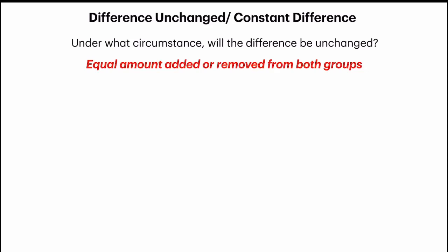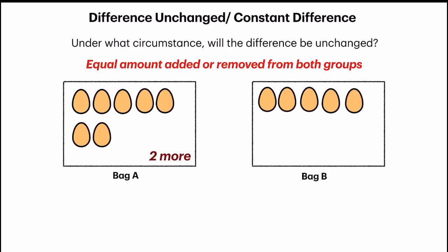Let me give you an example with two bags of eggs, bags A and B. There are seven eggs in bag A and five eggs in bag B, so there are two more eggs in bag A. Now I'm going to remove two eggs from each bag by crossing them out. What do you notice about the difference?